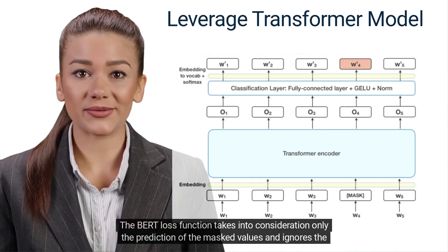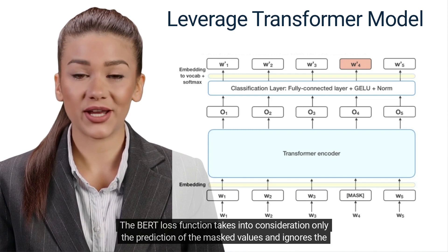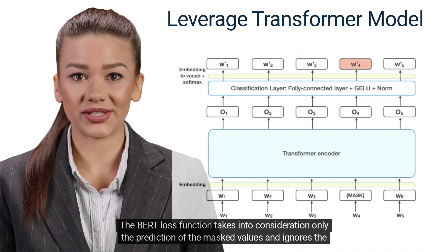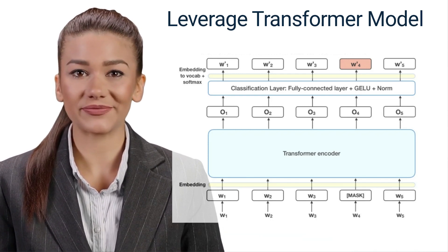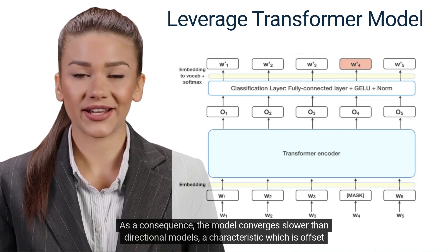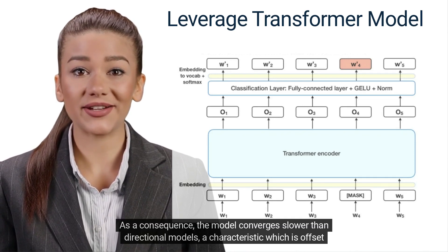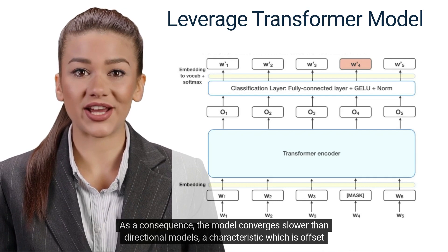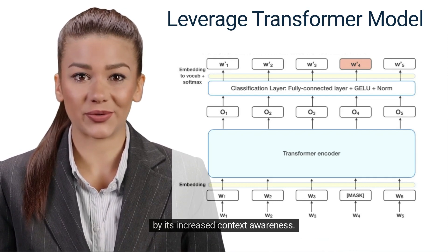The BERT loss function takes into consideration only the prediction of the masked values and ignores the prediction of the non-masked words. As a consequence, the model converges slower than directional models, a characteristic which is offset by its increased context awareness.